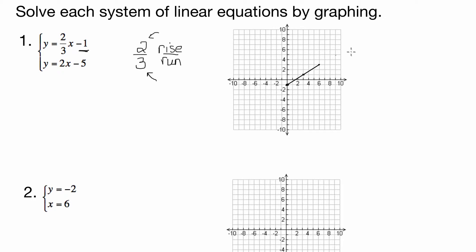If you had a ruler, you could draw it that way. I like to go point to point, but of course that line continues on forever. Alright, so let's graph the next one. I'll use blue. So we've got y equals 2x minus 5.